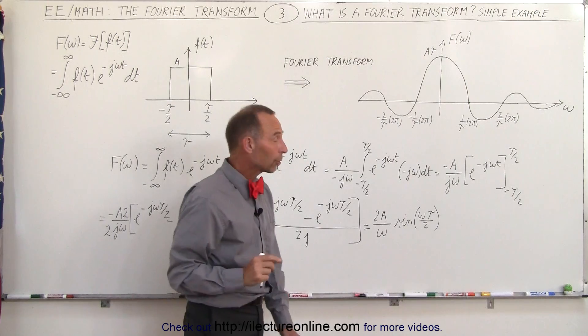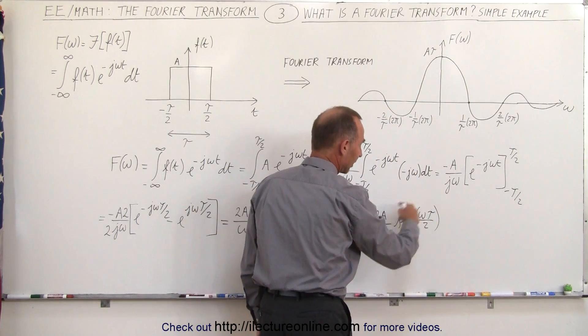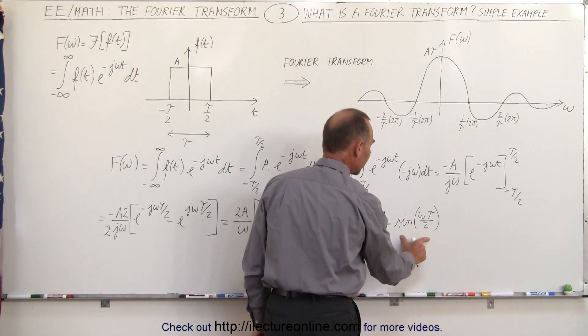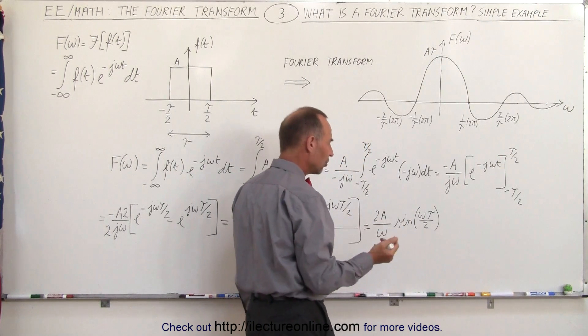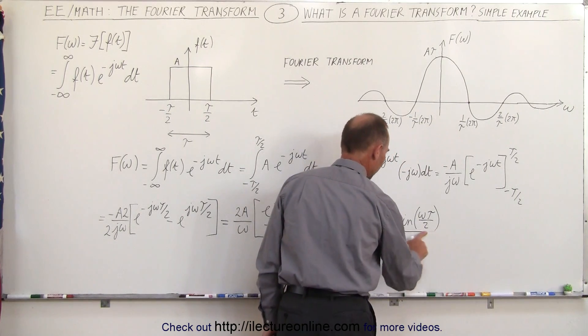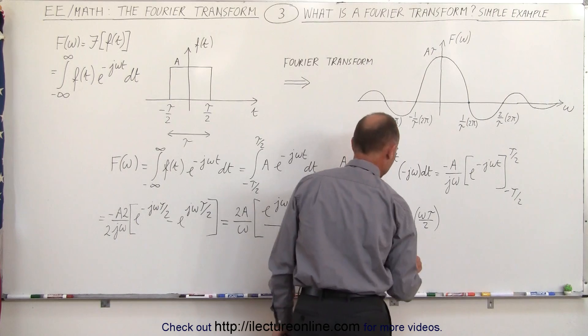Now we realize that we're going to end up with a sinc function so we're going to try to make this look like a sinc function which means we need an omega tau divided by 2 in the denominator. Alright, let's do that. So we're going to divide and notice we want omega over here so let me rewrite it so that it's a little cleaner here.